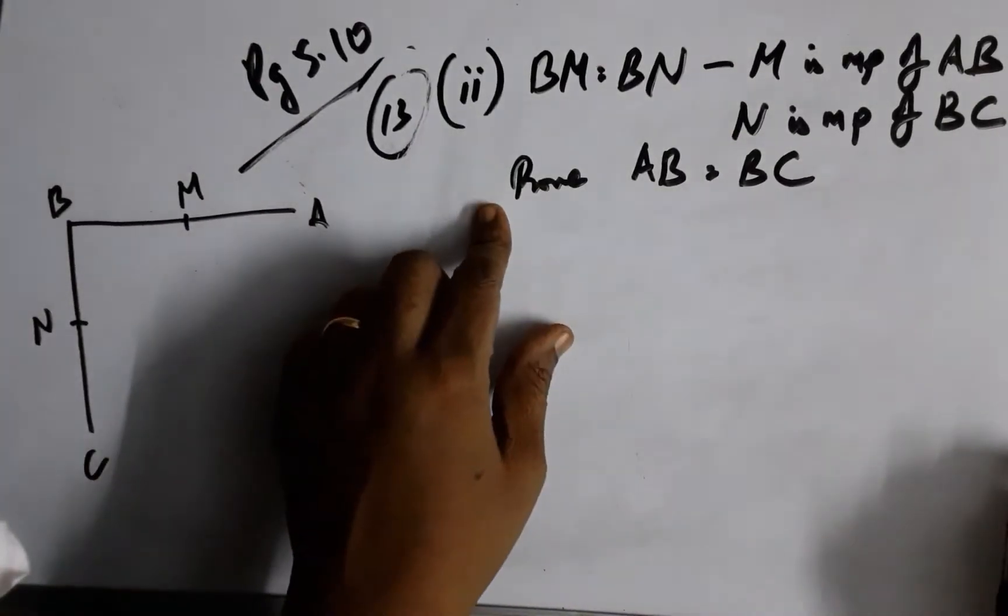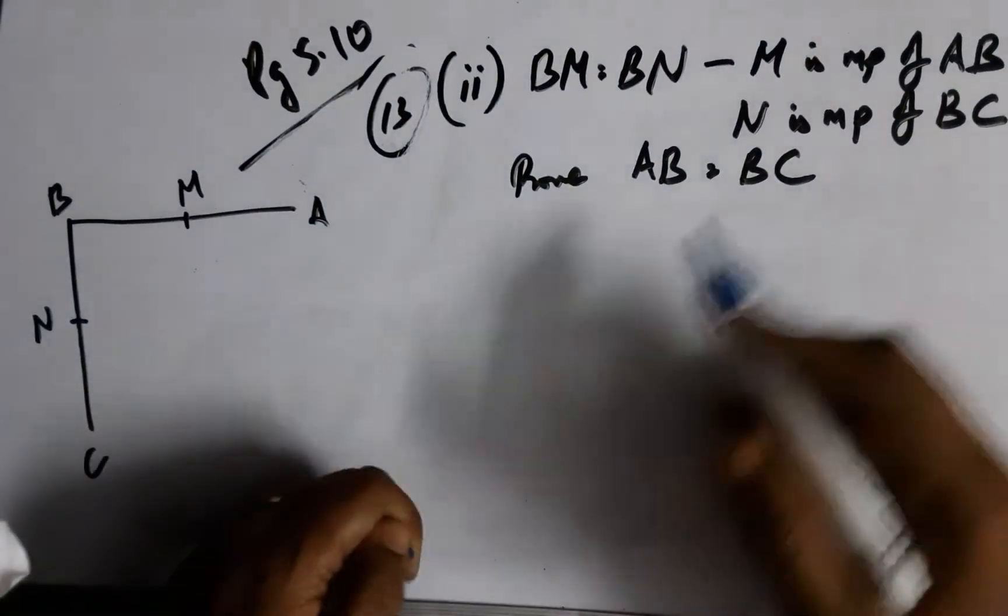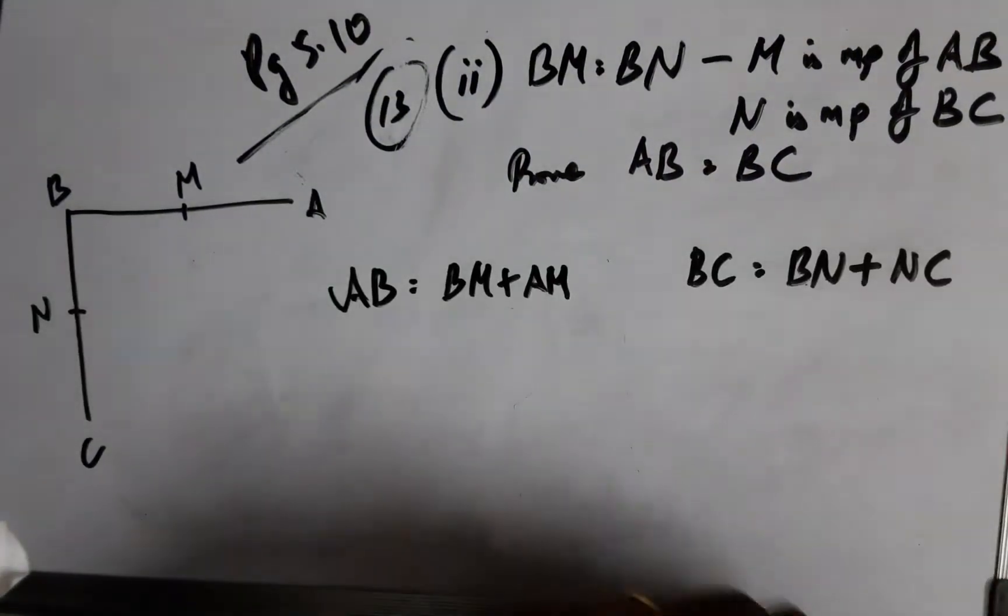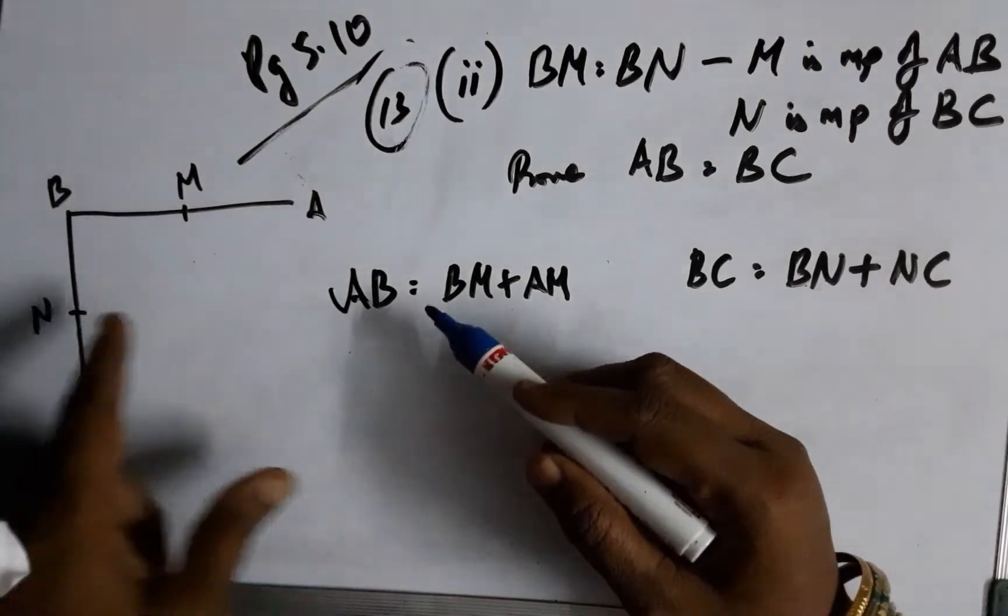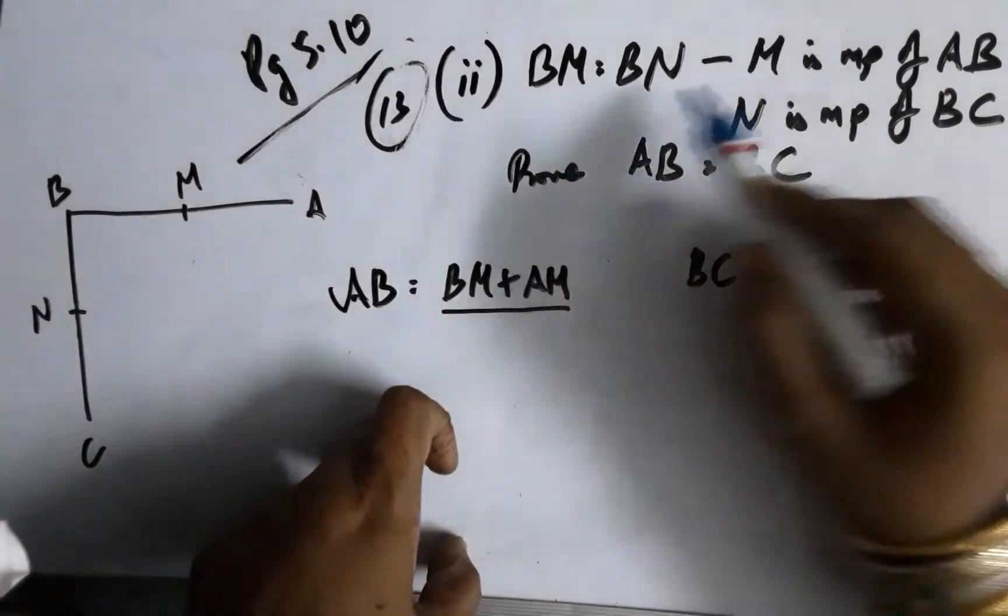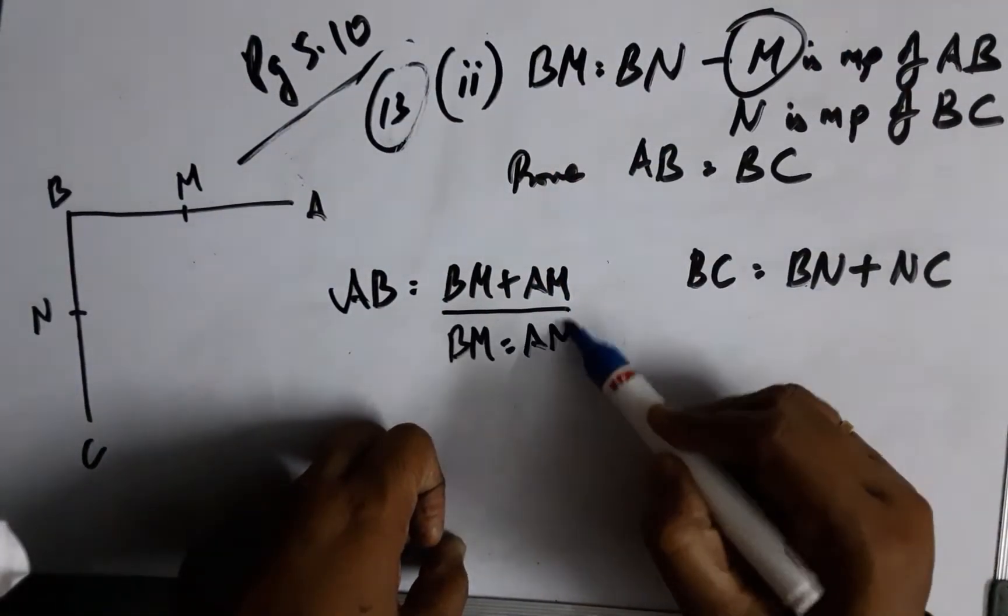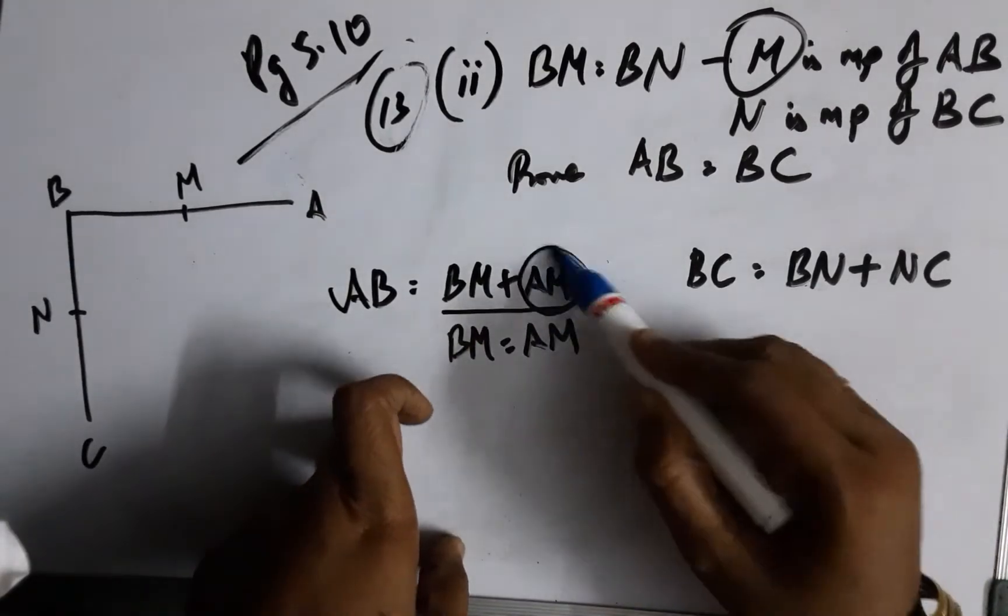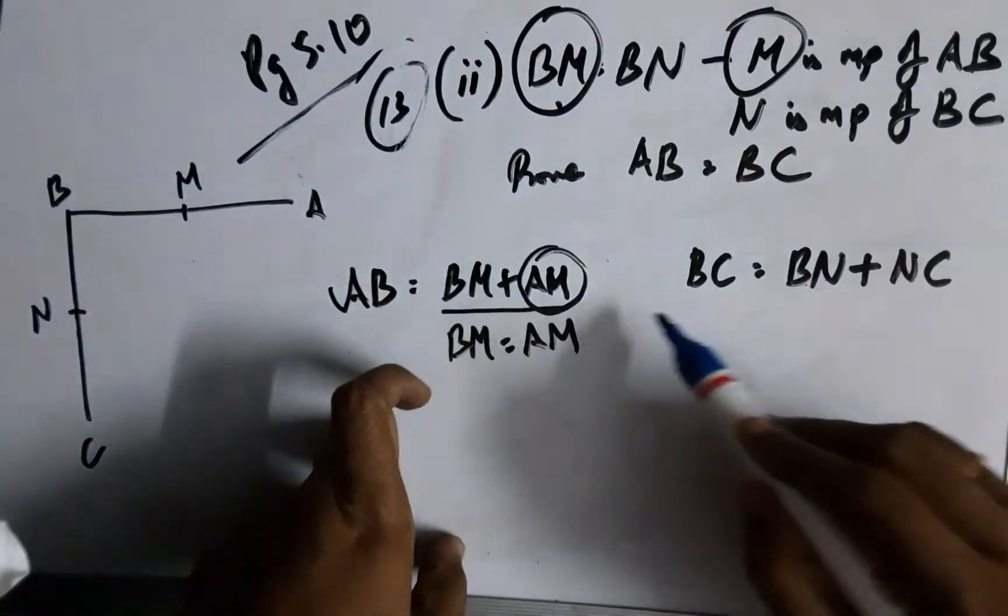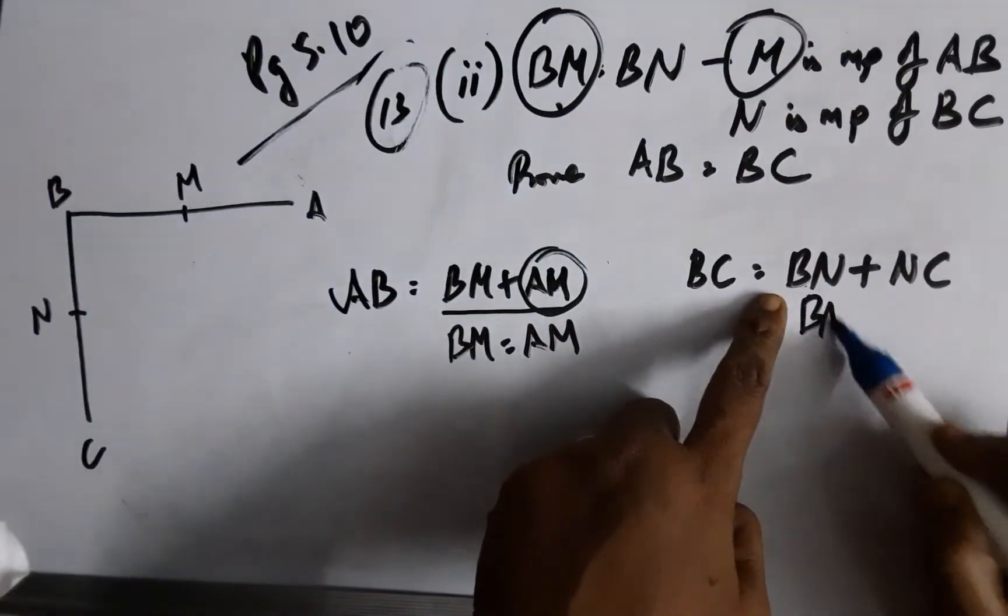Now I am supposed to prove the converse: BM equals BN, M is midpoint of AB and N is midpoint of BC. I know that AB is composed of these two things and M being the midpoint, I know that BM equals AM. I can replace this with BM because I am supposed to leave myself with BM and the other one is BN. Since BN equals NC.